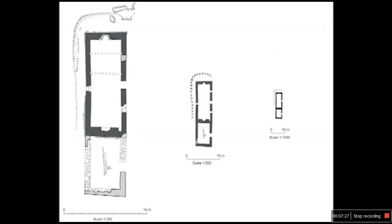Decide what scale to use for your drawing depending on the size of the site and the level of detail you want to record. The normal spectrum of scale used by archaeologists is between 1:1,250 and 1:100. The bigger the scale, the more detail you can record — but the more time it will take as you will be plotting more points. The smaller the scale, the larger the area you can cover, but it will not be as detailed. A small scale such as 1:1,250 might be more suitable for a large site with low footings or earthworks. Details such as door or window openings are obvious at a scale of 1:500, and a large scale such as 1:100 would be suitable for recording smaller features with a lot of detail.